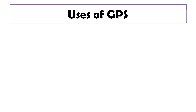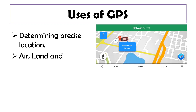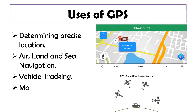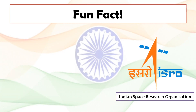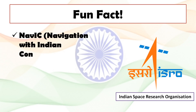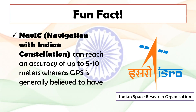Next come the uses of GPS. The first use is obviously determining the precise location. Apart from that, air, land and sea navigation is also one of the uses, then vehicle tracking and mapping. Here is a fun fact — the GPS we use today was developed by the US Army. But thanks to the Indian Space Research Organization, we now have our own GPS system called NAVIC, which stands for Navigation with Indian Constellation. The best part is that with NAVIC, we can reach an accuracy of 5–10 meters, compared to only 20 meters in the case of GPS.